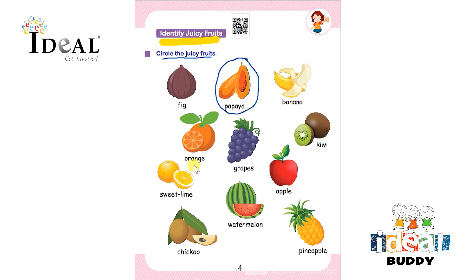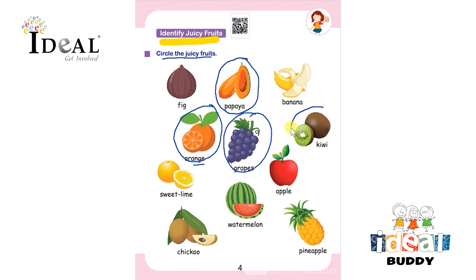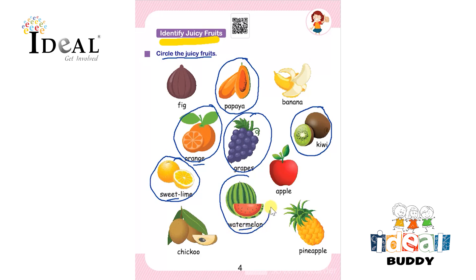After that it is orange — orange is a juicy fruit. Next is grapes — grapes is also a juicy fruit. Next is kiwi — kiwi is also a juicy fruit. Next is sweet lime — sweet lime is also a juicy fruit. After that it is watermelon — watermelon is also a juicy fruit.